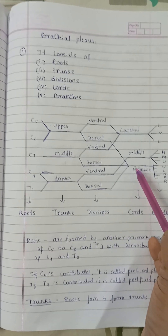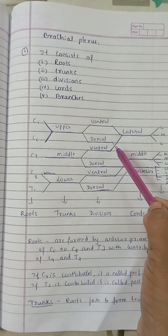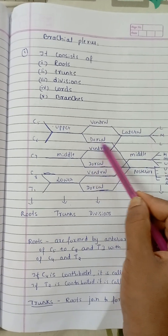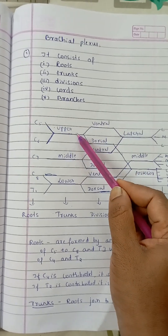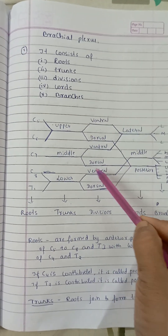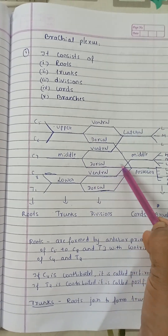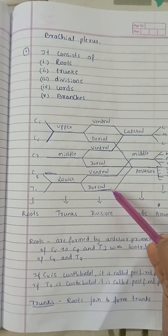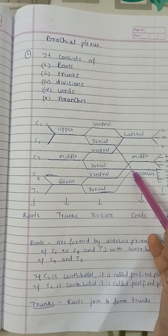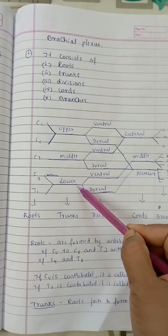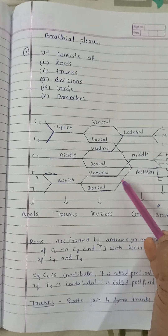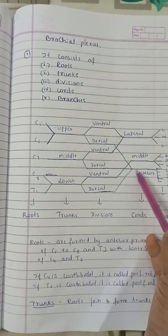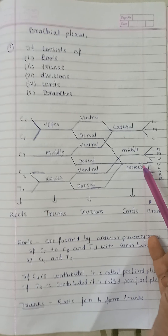The posterior cord is formed by the joining of all three dorsal divisions — the dorsal division of the upper trunk, the dorsal division of the middle trunk, and the dorsal division of the lower trunk.